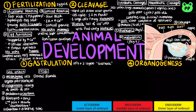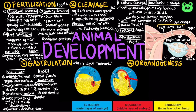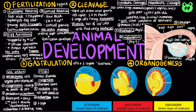Gastrulation in the frog begins when cells on the dorsal side invaginate to form the blastopore. The part above the crease is called the dorsal lip. Cells continue to roll over the dorsal lip by involution, which forms the archenteron as the blastocoel shrinks, leading to the formation of 3 layers: the endoderm is the innermost layer, the mesoderm is the middle layer, and the ectoderm is the outer layer.